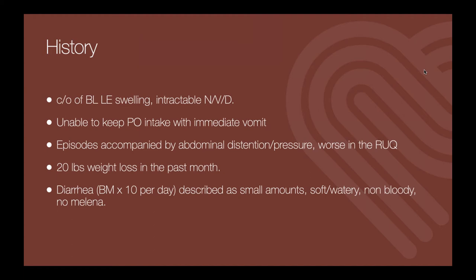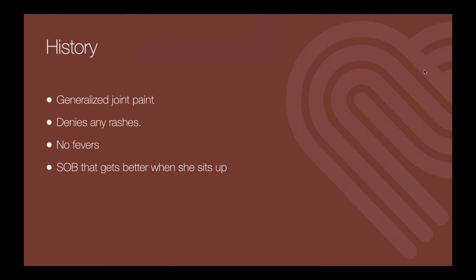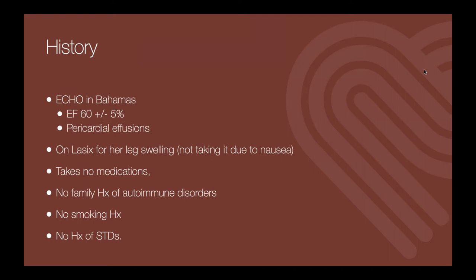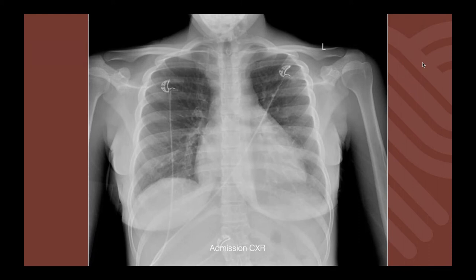To summarize additional history: she couldn't keep any PO intake, had some weight loss in the past month, and diarrhea. Very non-specific findings, no fevers, and shortness of breath that gets better when she sits up — so there are some clues here and there. The echo from the Bahamas showed pericardial and pleural effusions. She was placed on Lasix. Again, this is a very young woman with no real prior history.